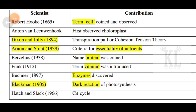These two scientists' names are called terminologies. Protein was named by Berzelius in 1838. Vitamin was named by Funk. Enzymes were discovered by Buchner. So: Protein — Berzelius, Vitamin — Funk, Enzymes — Buchner.